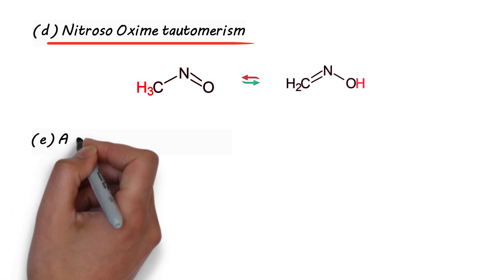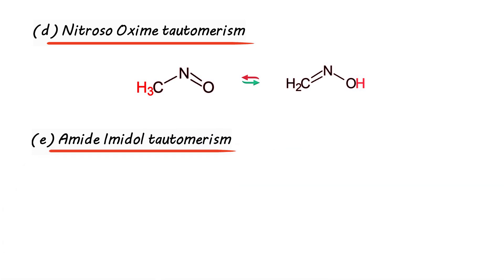Again we have amide-imidol tautomerism, wherein hydrogen attached to nitrogen is migrated to oxygen to form imidol. Point to be noted is it is preferably the hydrogen attached to nitrogen which is migrated rather than the hydrogen attached to carbon. This is because NH bond is more acidic compared to that of CH bond.